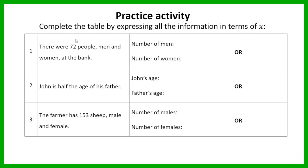Let's go through the solutions. You only had to do one version for each, but I'll show both options. For the first one — there are 72 people, men and women, at the bank — this is a total made up of two groups. I make the number of men x, and then the number of women is the total minus x, which is 72 minus x. Or I could make the number of women x, and the number of men would be 72 minus x.